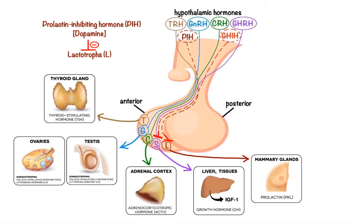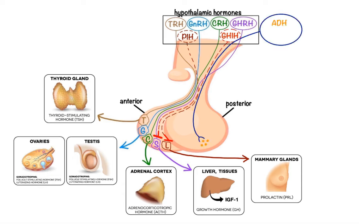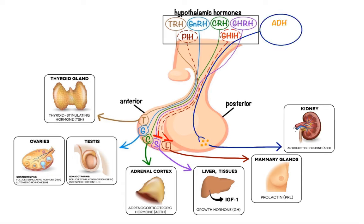Moving on to the second group of hypothalamic hormones, which are transported down the axons of the same neurons that synthesize them to the posterior pituitary, from where they are released into the circulation. These are anti-diuretic hormone, ADH for short, which acts primarily on the kidney to regulate water balance in the body, and oxytocin, which regulates uterine contractions and milk ejection.